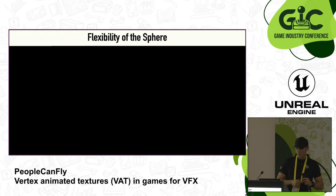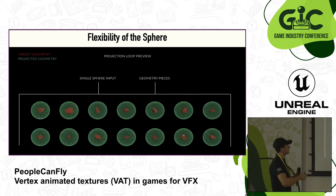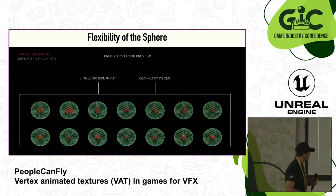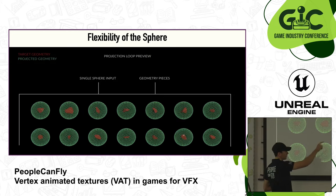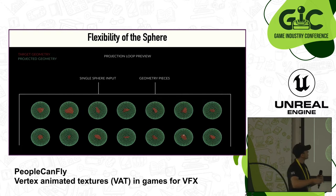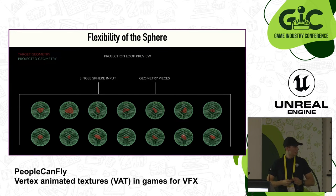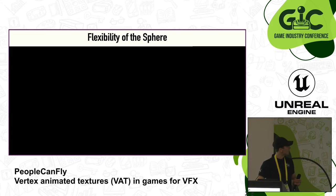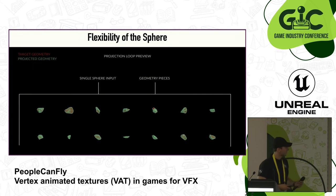With a single sphere we can iterate over every piece of the geometry. Every piece here is part of a fractured mesh — if you fracture a mesh into ten pieces, each piece is represented by this single sphere. We iterate over every piece and inside this loop we use a single sphere input projected onto the target piece currently in the iteration. We're using just a sphere with about 642 vertices and we're able to reproduce every piece almost perfectly.